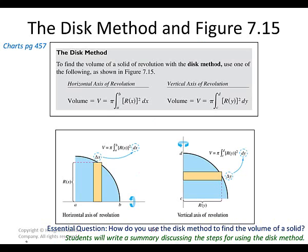We add up all those radii — that's where the integration comes in. Make sure these two formulas are written out in the left-hand column. For a horizontal axis use dx, for a vertical axis use dy — just write 'disk method' and write these two things down.